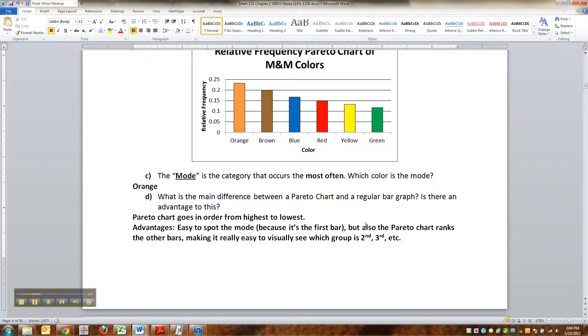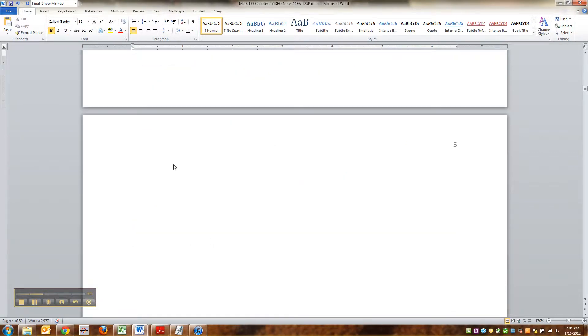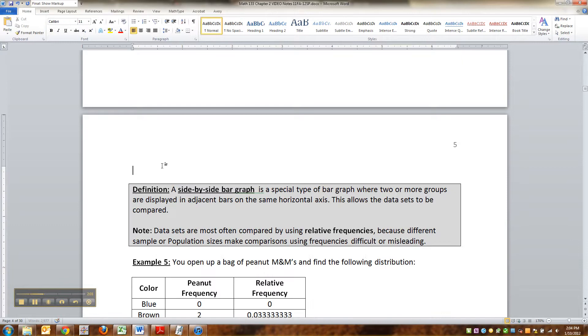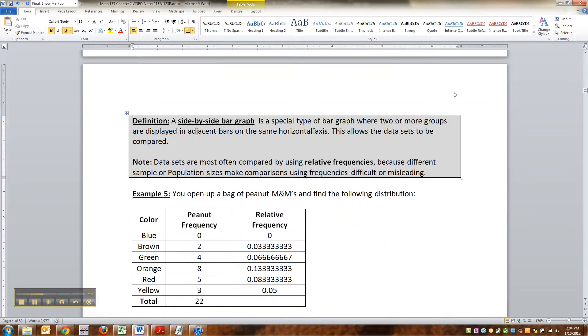It makes it easier to spot, much easier to find which bar is second, which bar is third, which bar is the least. You don't even need to think, it just kind of is shown to you. So that's the end of Pareto chartness. Now let's talk about the side-by-side bar graph.